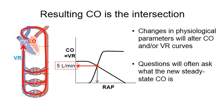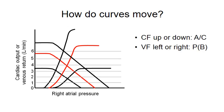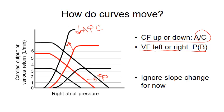Questions will often ask what the new steady state cardiac output is, so we have to determine how these curves move. The cardiac function curve moves up or down depending on the afterload and contractility. For example, if contractility is increased or the afterload is decreased, the cardiac function curve moves up. The vascular function curve moves left or right depending on the preload or blood volume. If the preload is increased, the vascular function curve moves right. For Wednesday's exam, you can ignore the slope changes.